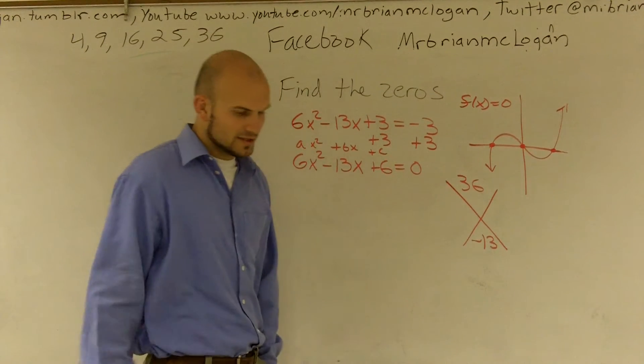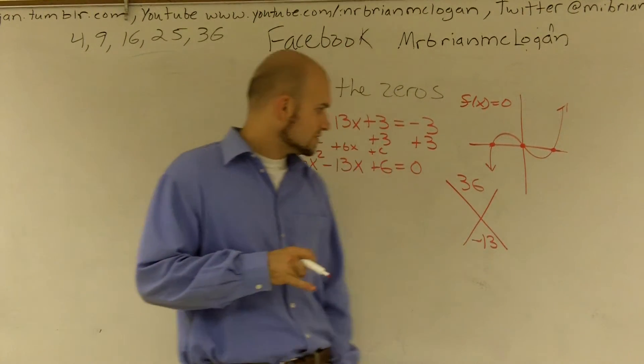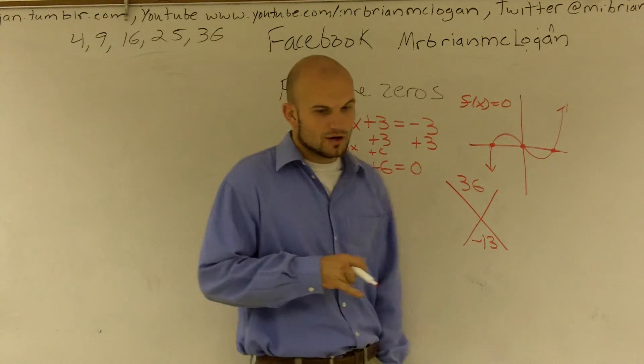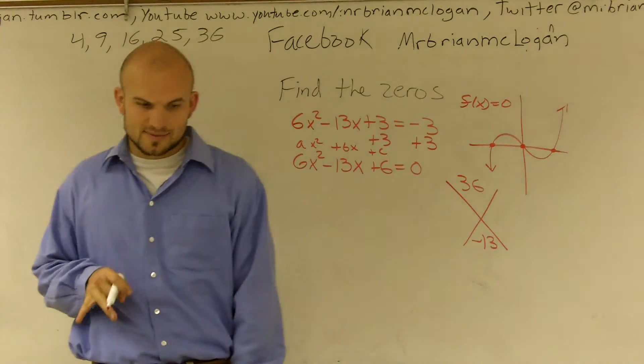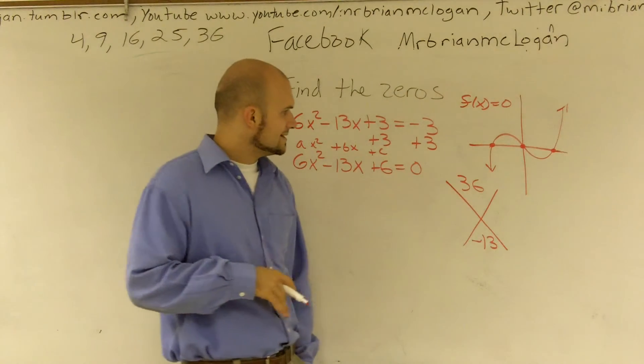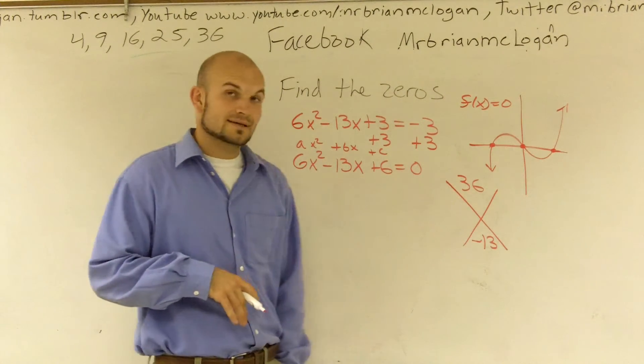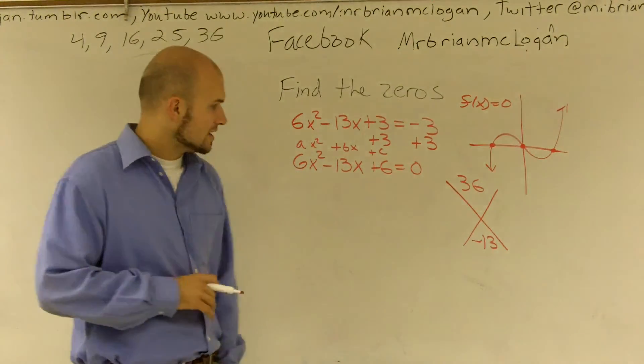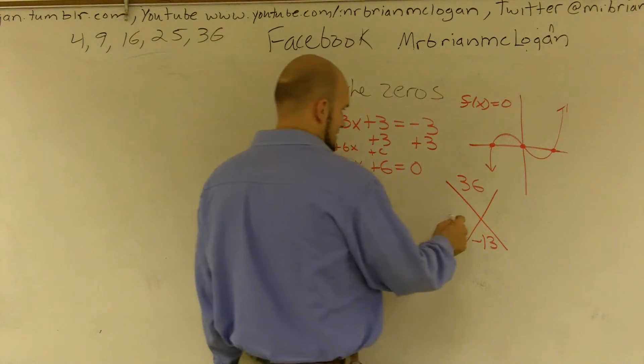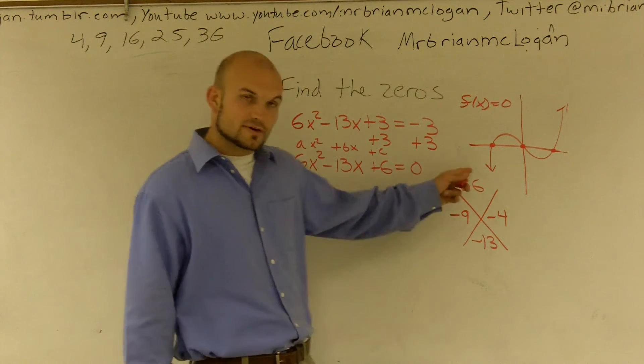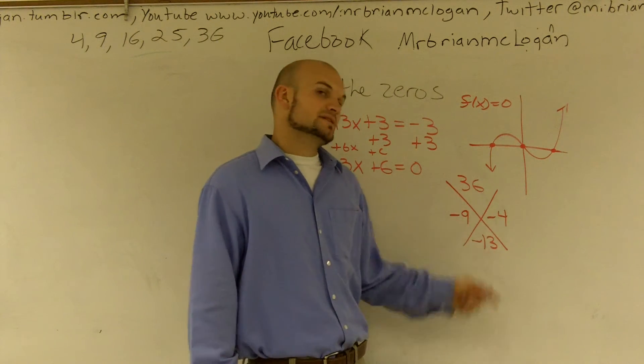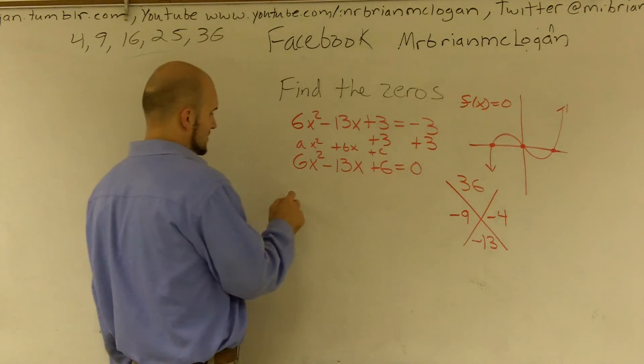And I think of, well, the numbers that multiply to give me 36 are going to be 12 and 3, and 6 times 6. Let's see, 9 and 4 are also going to give me 36. And let's say if I did a negative 9 and a negative 4, that gives me 36, and it also adds up to giving negative 13.